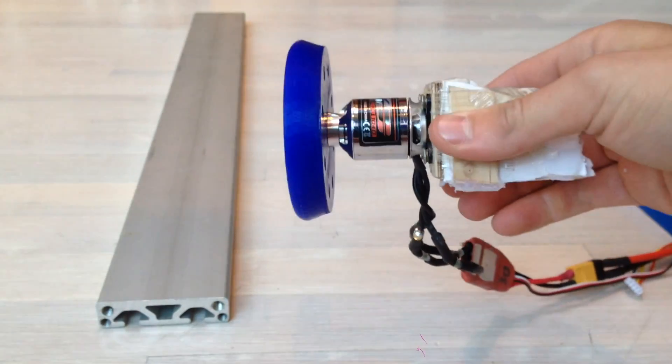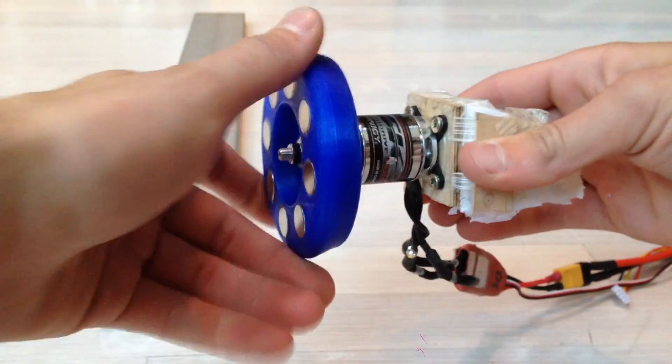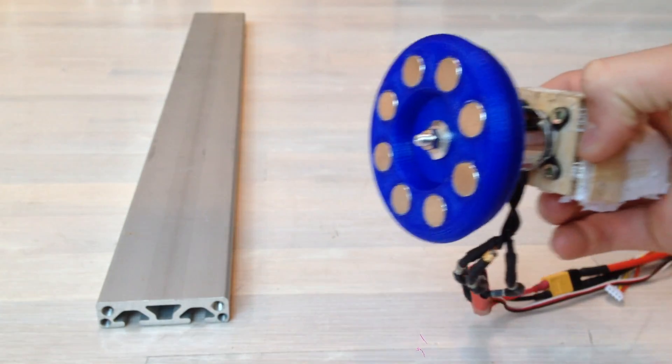So these magnets are on a motor, and this motor is going to spin like so, and the magnets will be spinning at around 8,000 RPM.